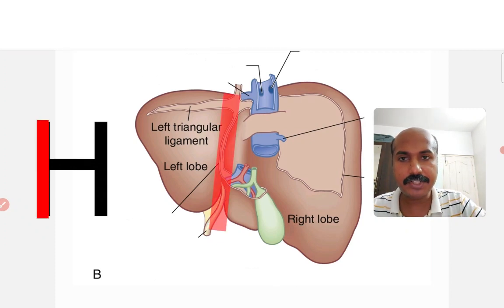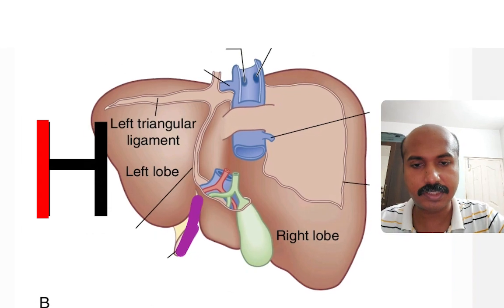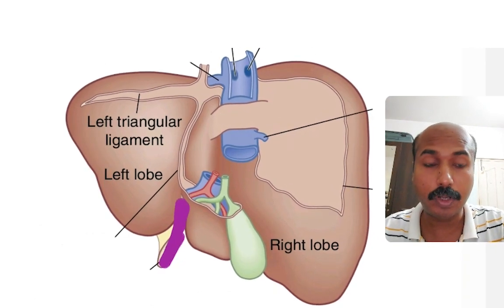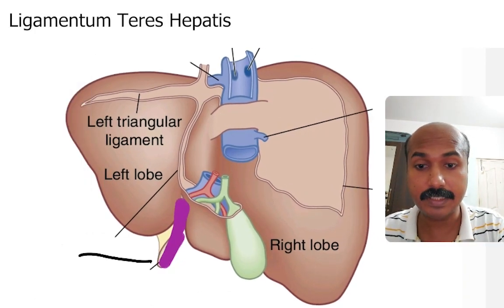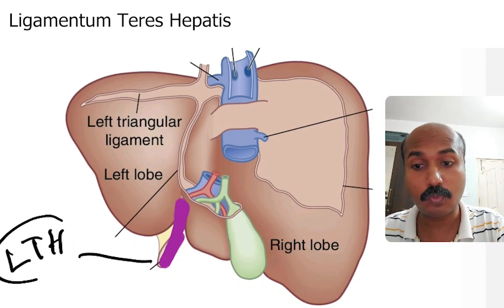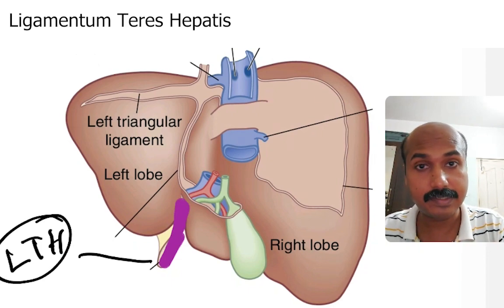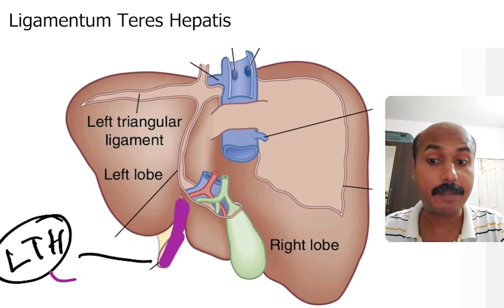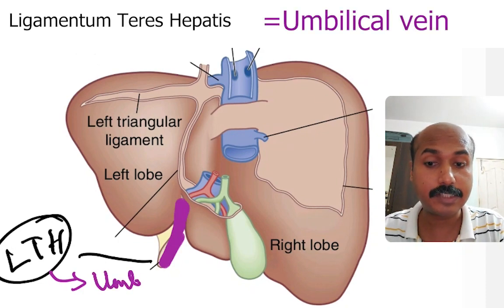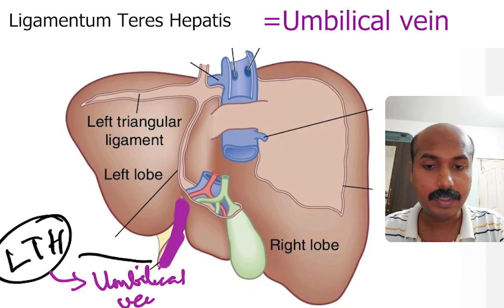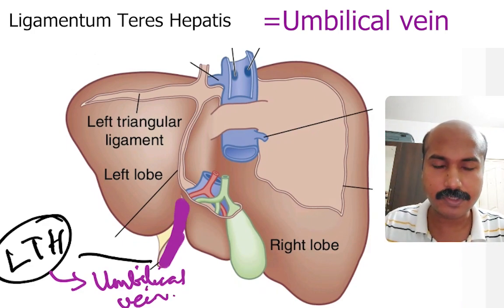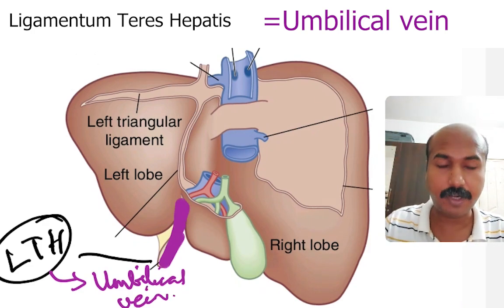As mentioned in the previous video, this structure that you see on the lower part is the ligamentum teres hepatis. You will be asked what the ligamentum teres hepatis is — it is a remnant of the umbilical vein, the obliterated umbilical vein. This was dealt with along with the falciform ligament in the front view of the liver.